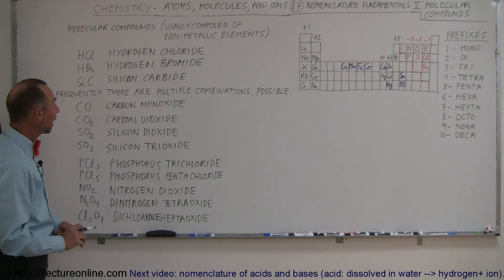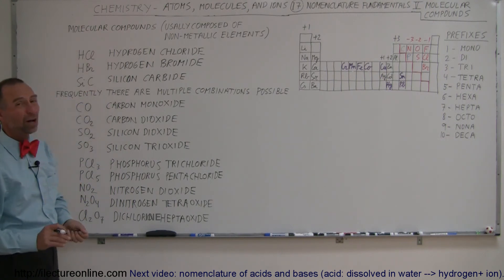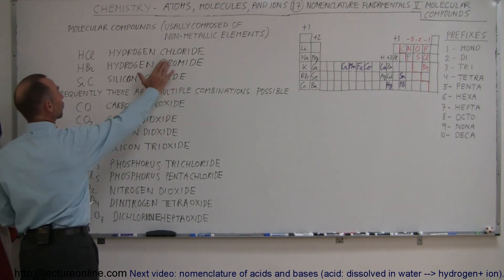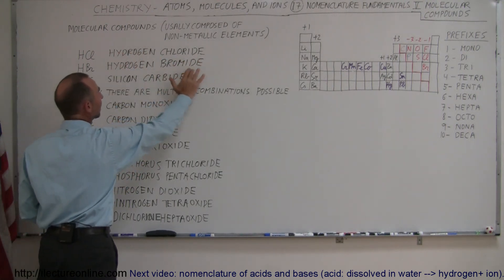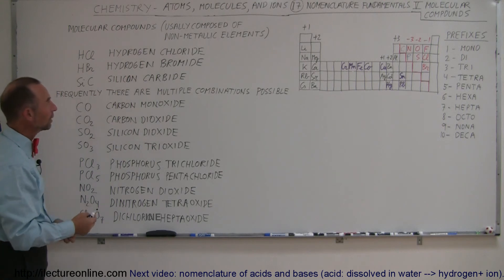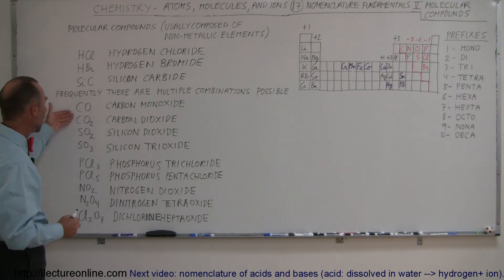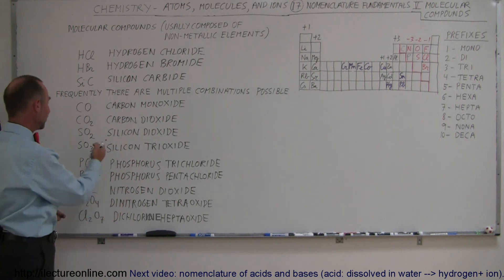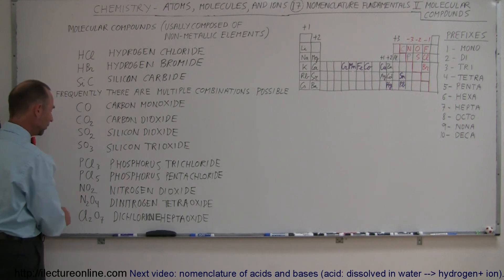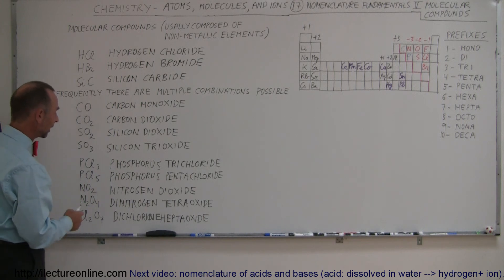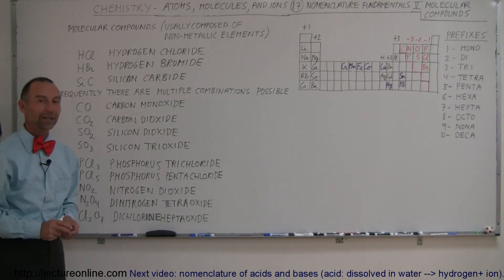Now you can see how we want to name these kinds of compounds. They're what we call molecular compounds. In some cases they sound just like the ions—we use the "-ide" ending: instead of calling it chlorine, we call it chloride; bromine, bromide, and so forth. But if there's combinations where there's multiple options, where we have carbon with a single oxygen or carbon with double oxygen, we want to use the prefixes. Even if the element in the front has more than one atom, then we also use the prefixes for the first name as well—dinitrogen, dichlorine heptoxide, and so forth. That's how we name molecular compounds.